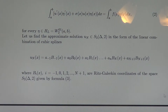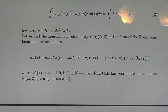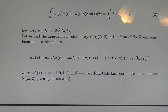Let us find the approximate solution U_N in the space of cubic splines, in the form of a linear combination of B-splines. That is, U_N equals a_{-1}·B_{-1}(x) + a_0·B_0(x) + ... + a_{n+1}·B_{n+1}(x). We have n+3 Ritz coordinates, starting from index minus 1, zero, up to n+1.